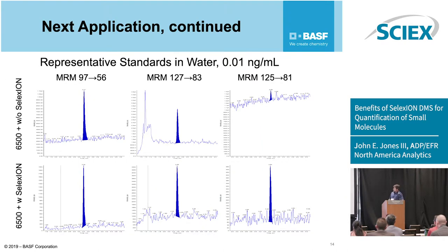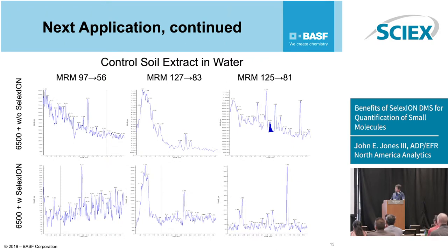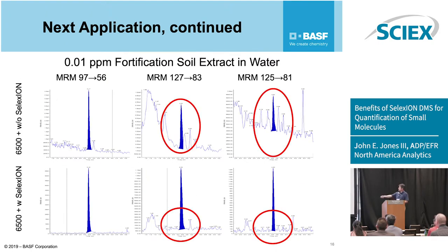Here's the representative standard — on top without SELEXION, you can see this very high background. This one runs in negative mode, and the 6500+ is much better in negative mode than the 6500. When you put SELEXION on, look how everything calms down. Here's our control — you see some stuff coming out, but with SELEXION it's clean.